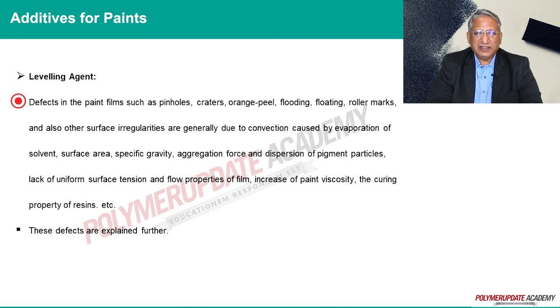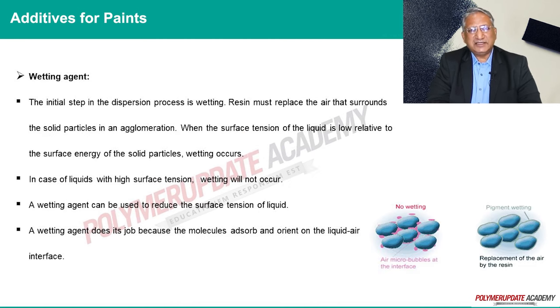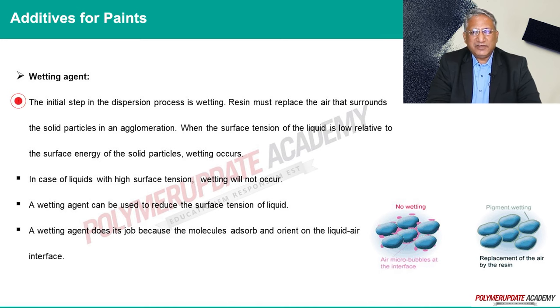Wetting agents: wetting is the first step in the dispersion process. The air that surrounds the solid particle in an agglomerate must be substituted by resin. Wetting will take place when the surface tension of the liquid is low compared to the surface energy of a solid particle. Wetting will not occur when the surface tension of a liquid is too high.